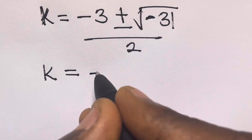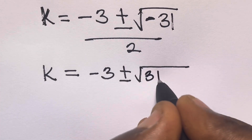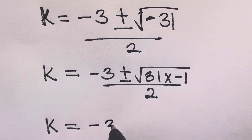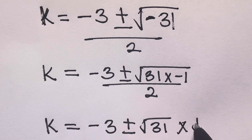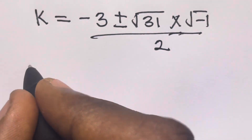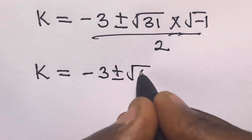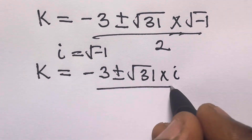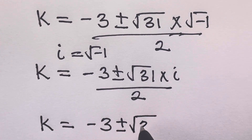So we have k equals minus 3 plus or minus square root of negative 31 divided by 2. We can write square root of negative 31 as square root of 31 times square root of negative 1. Since i equals square root of negative 1, this becomes square root of 31 times i.